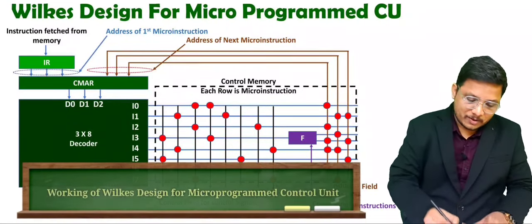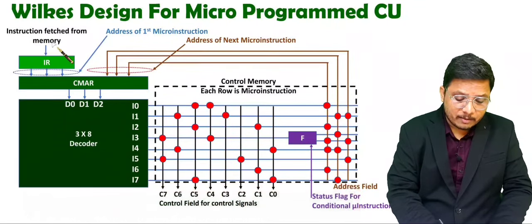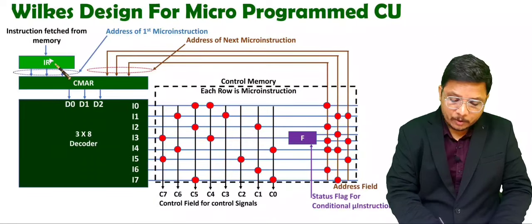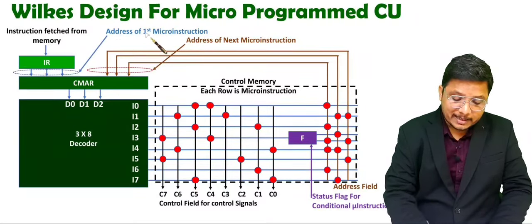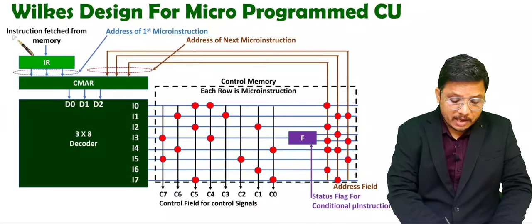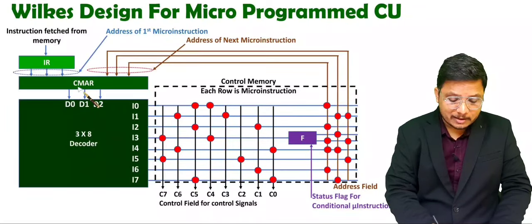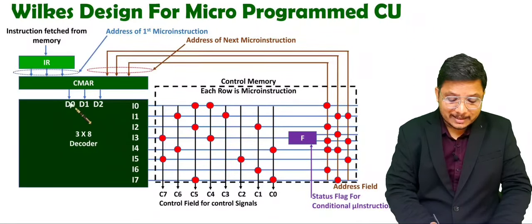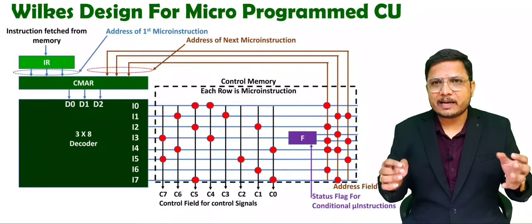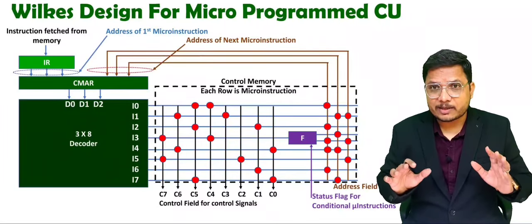Let us see how things are happening. The instruction fetched from memory will go inside the IR register. The IR register will be identifying the opcode, and it will give the address of the first micro-instruction to CMAR — the control memory address register. So the first address of a given instruction is given by the IR register to CMAR, which is connected with a 3x8 decoder. This 3x8 decoder will be generating 8 micro-instructions.